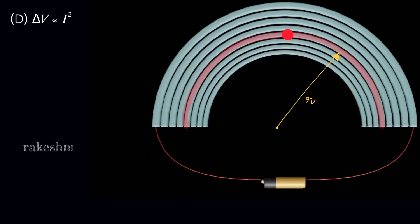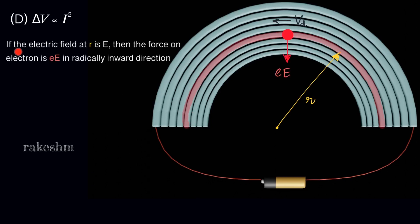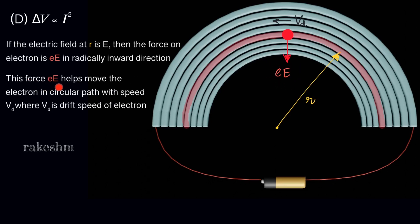Consider an electron moving along the strip. At radius r, if the electric field is E, then the force on the electron is e·E directed radially inward. This force enables the electron to move in a circular path with drift speed Vd. So we can write: e·E equals m·Vd²/r.